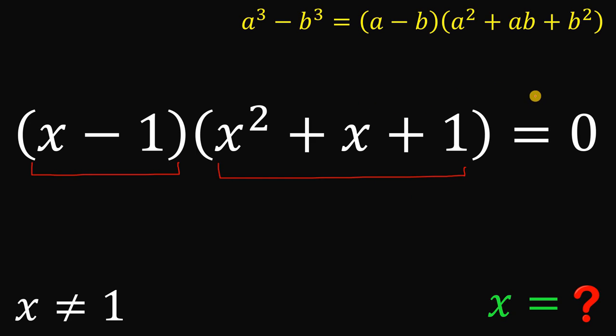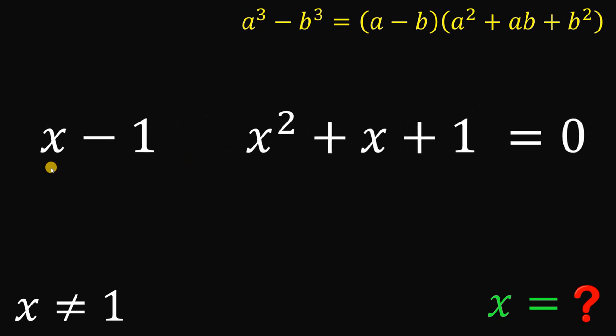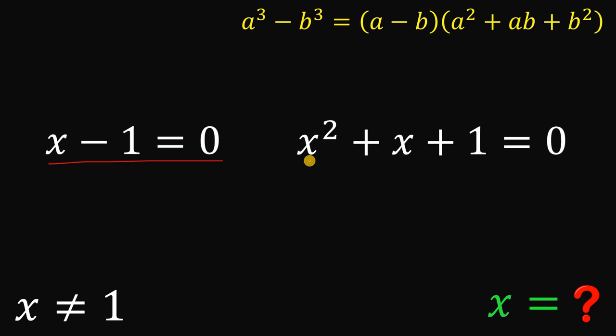Now since it is equal to 0, it follows that at least one of them must be equal to 0, or simply the zero property. So we can say that x minus 1 equals 0 or x squared plus x plus 1 equals 0.